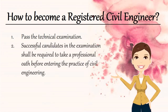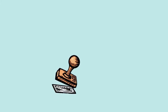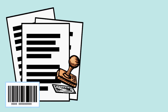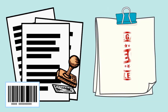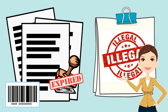Secondly, successful candidates in the examination shall be required to take a professional oath before entering the practice of civil engineering. And thirdly, register — to get your certificate of registration and professional license. All registered civil engineers shall obtain a seal which shall be stamped on all plans and specifications prepared by or under the supervision of the civil engineer. Make sure that the serial number of the certificate issued by the board shall be included in the design of the seal. It is unlawful for anyone to stamp or use the seal on any documents after the certificate of the registrant has expired or has been revoked. Renew your professional license before its expiration in order to continuously practice your profession lawfully.